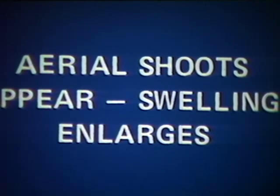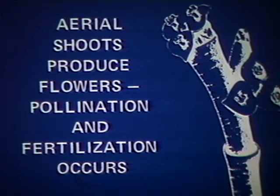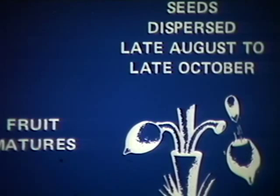Aerial shoots appear during the third year, and stem and branch swellings enlarge. Emergence of the flower, pollination, and fertilization all occur in the fourth year. In the fifth year, the fruit matures, and seeds are dispersed over a wide area.